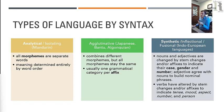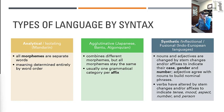Nouns and adjectives are changed by suffixes and by stem changes to indicate case, gender, and number. Adjectives almost always agree with nouns to build nominal phrases. Verbs are altered by stem changes and/or affixes to indicate tense, mood, aspect, number, and person. As we already saw, we can say 'I walk,' 'we walked,' 'you will walk,' 'thou walkest' — though that morpheme, the -est ending for the second person, we haven't used in English for a few centuries.